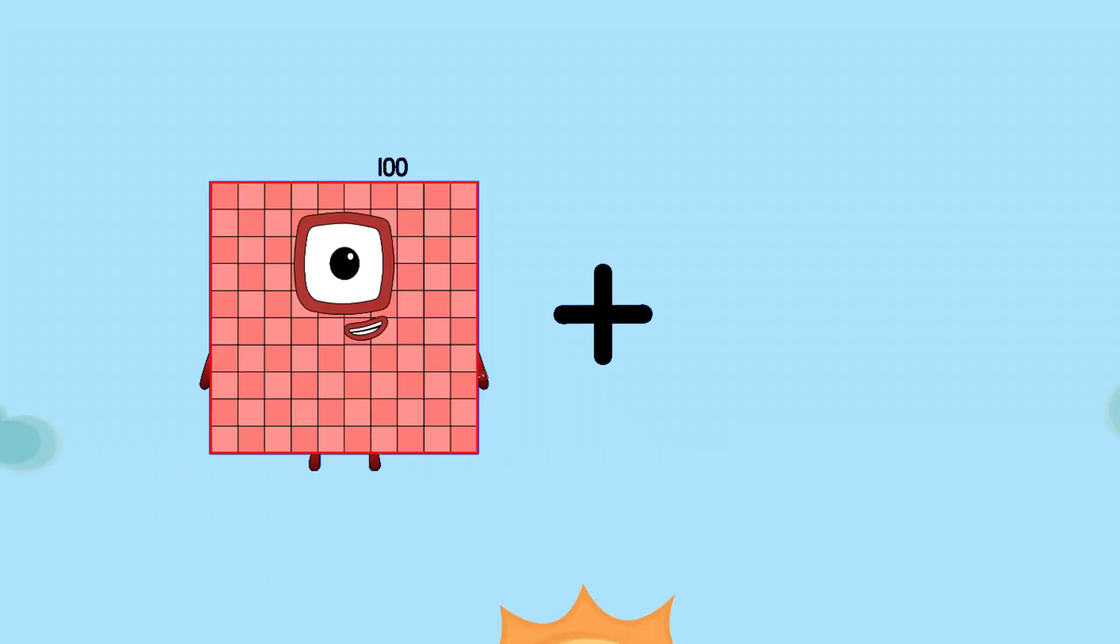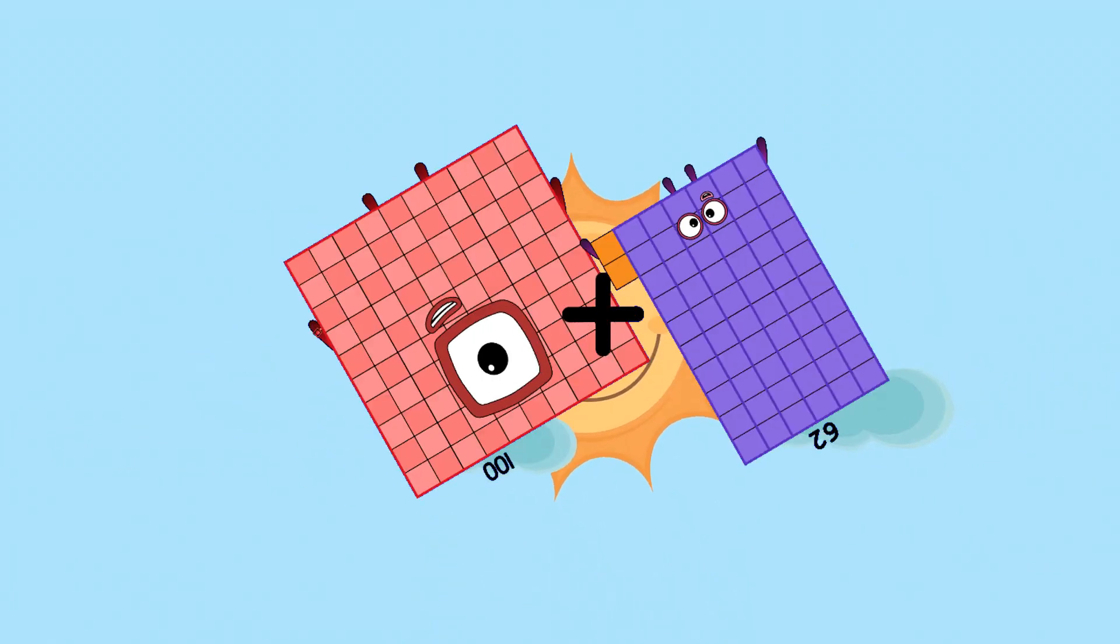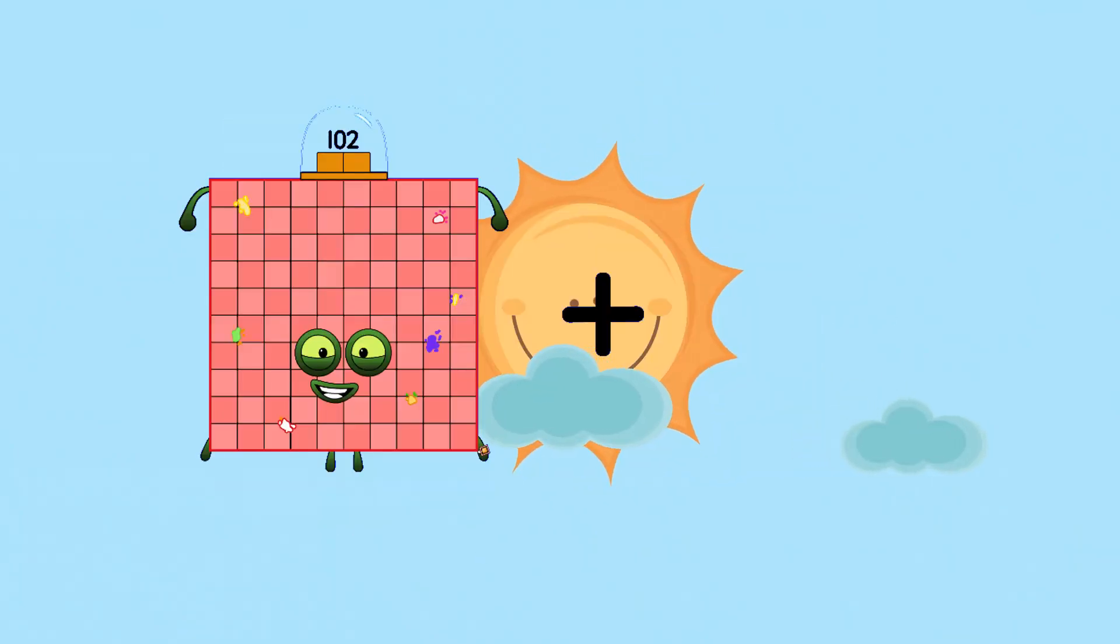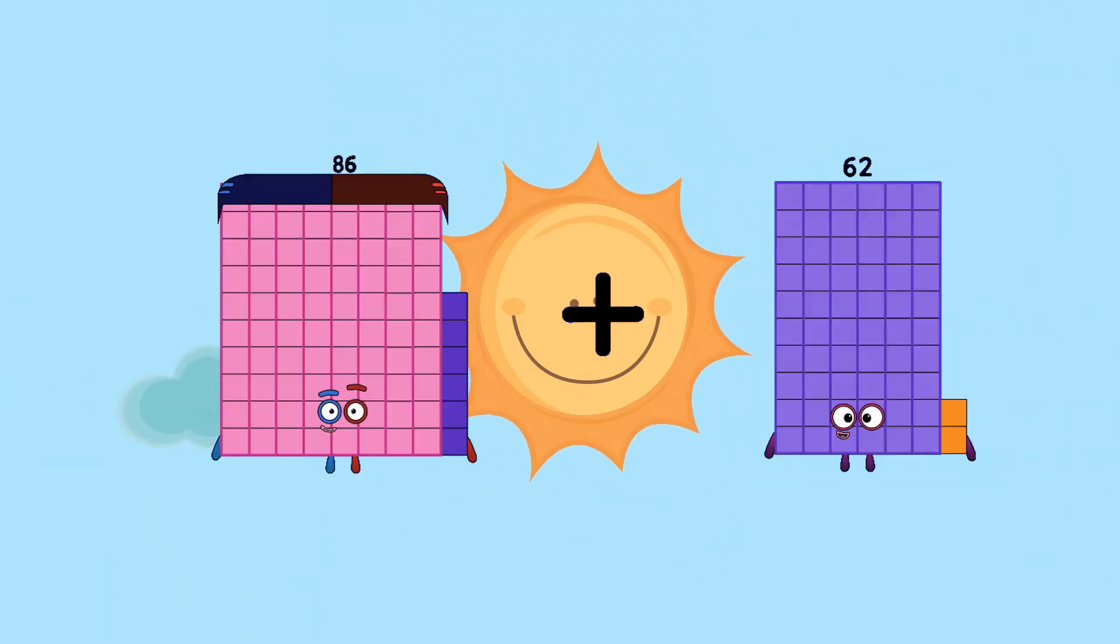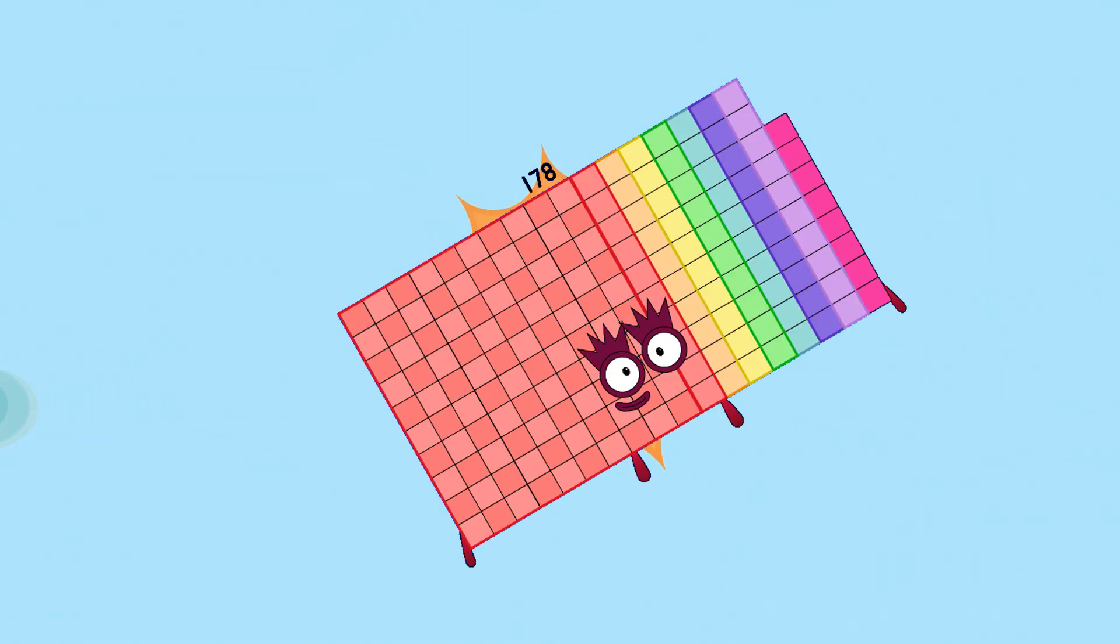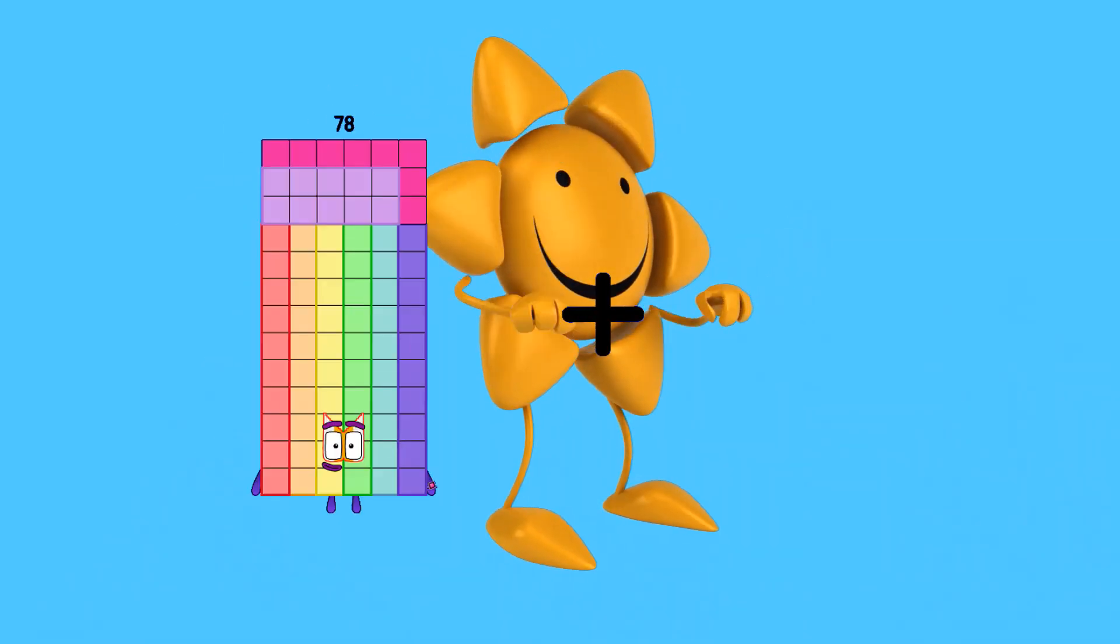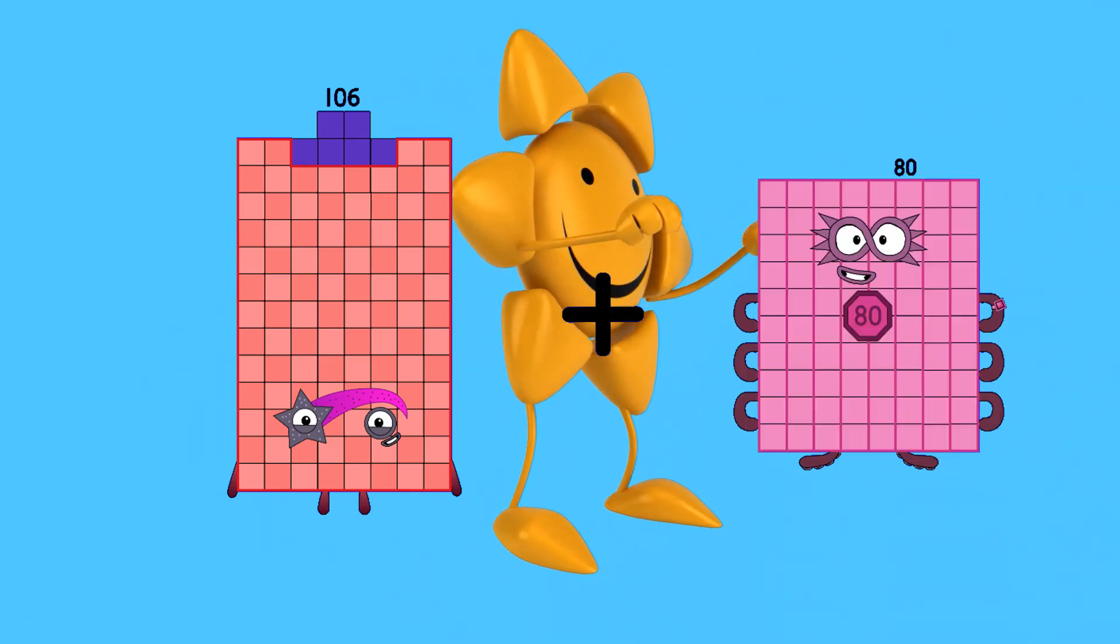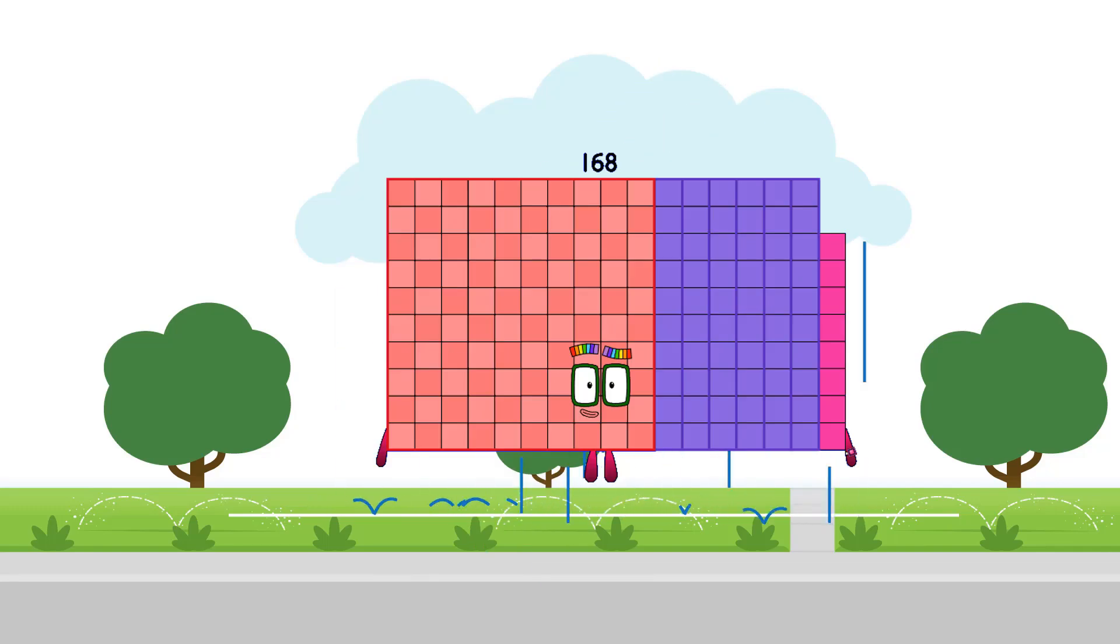One hundred plus sixty-two equals one hundred sixty-two. Eighty-six plus ninety-two equals one hundred sixty-eight. One hundred six plus sixty-two equals one hundred sixty-eight.